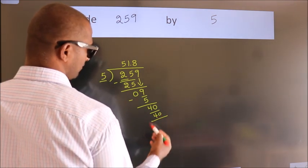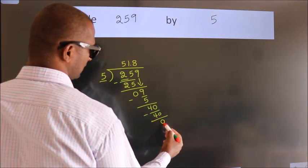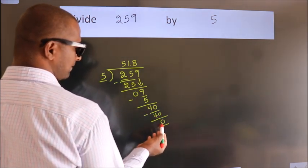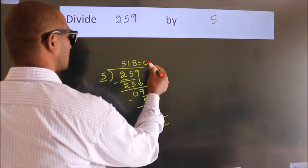Now we subtract and get 0. We got remainder 0, so this is our quotient.